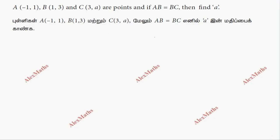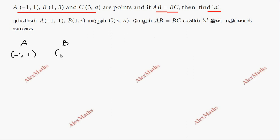Hi students, this is Alex here. We have 3 points A, B, and C, and the condition AB equal to BC. This is a small 'a' value. So we have A and B points: A is minus 1, 1 and B is 1, 3.